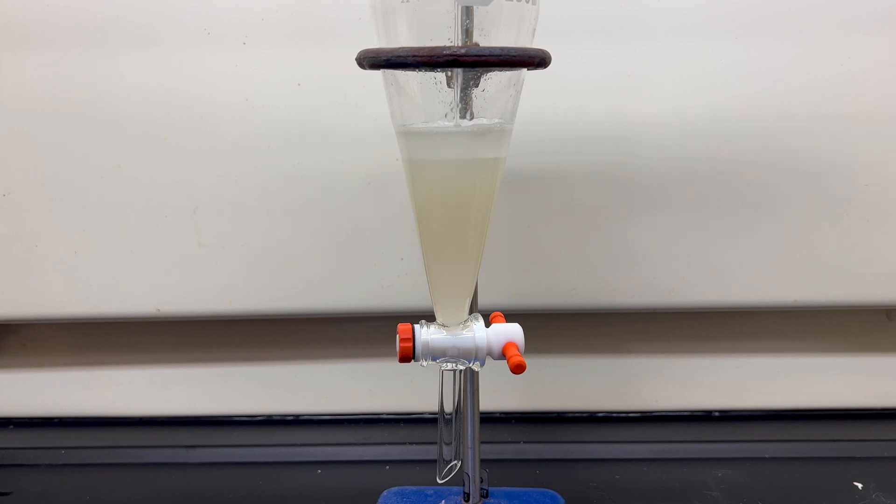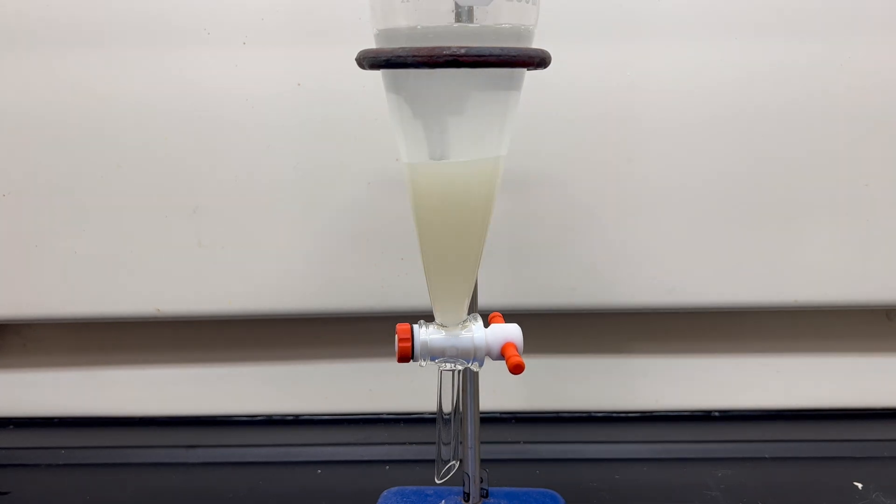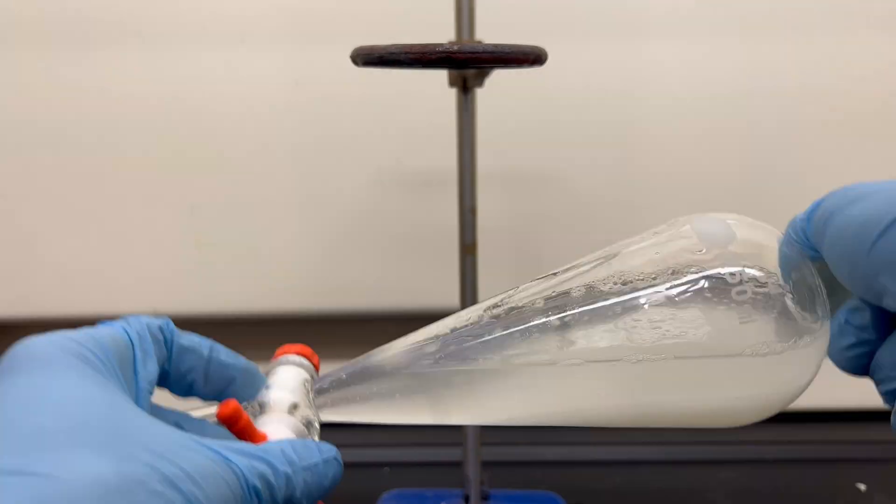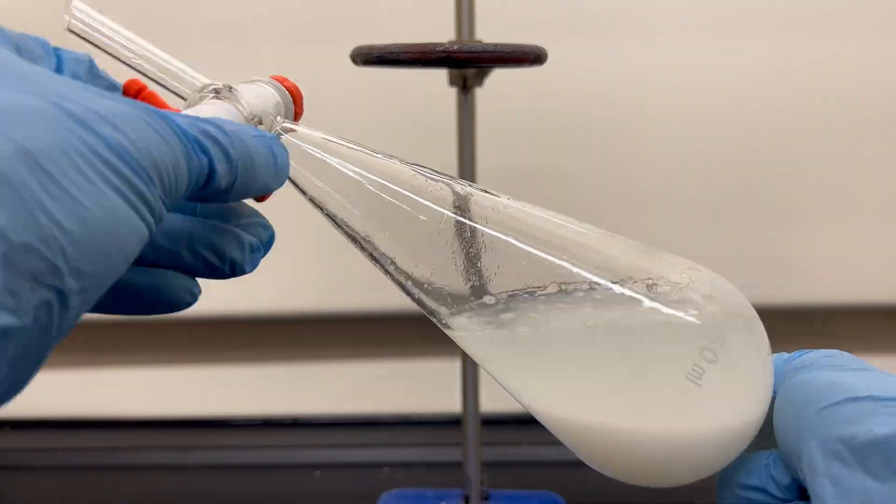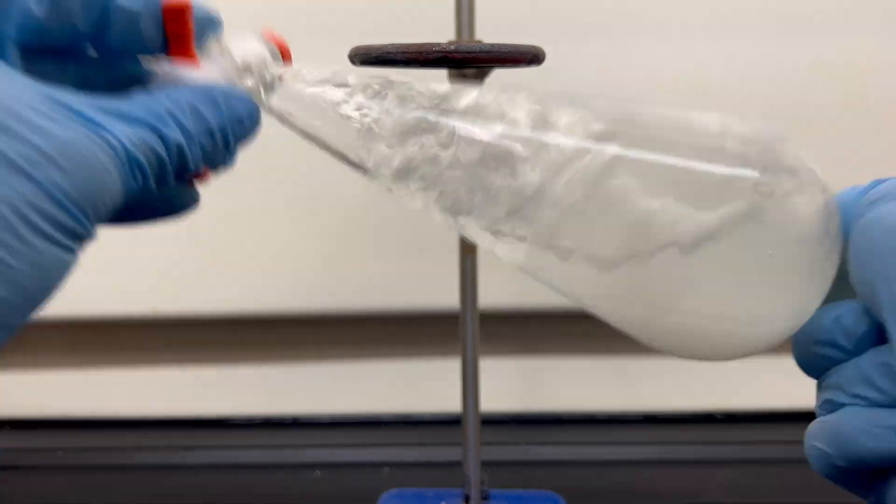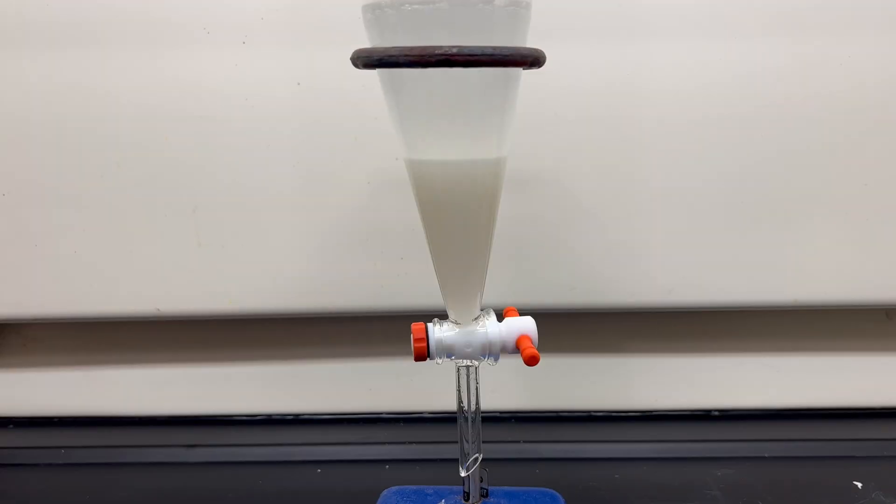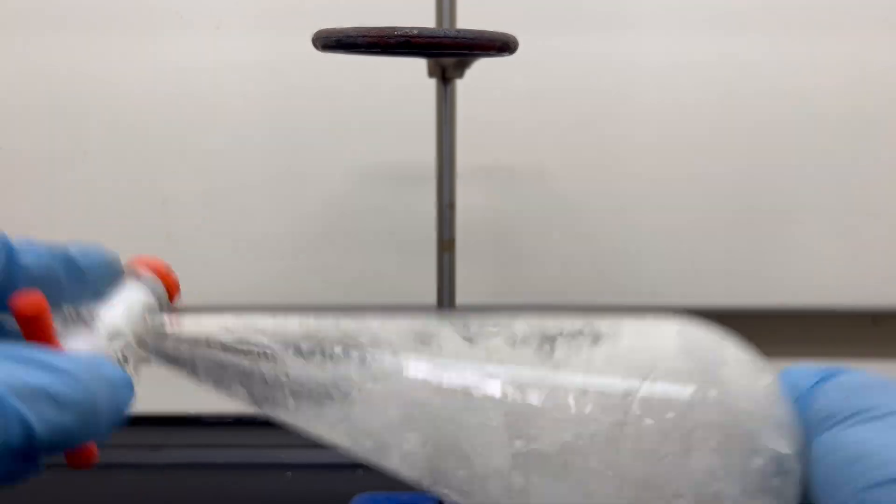We transfer the product layer into another separatory funnel, and then wash the product with sodium bicarbonate solution. This is to remove any leftover acid and any water-soluble impurities. We then do a final washing with water.